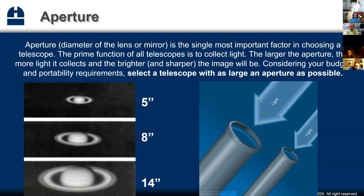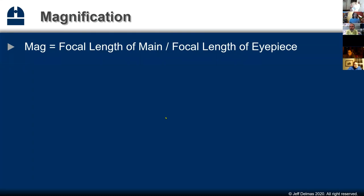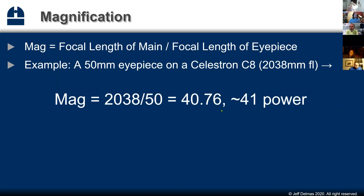Magnification is the focal length of your main objective or mirror divided by the focal length of the eyepiece. For example, if you have a 50-millimeter eyepiece on a Celestron C8 with a roughly 2,000-millimeter focal length, you get about 41 power. That's a typical kind of power you would use.